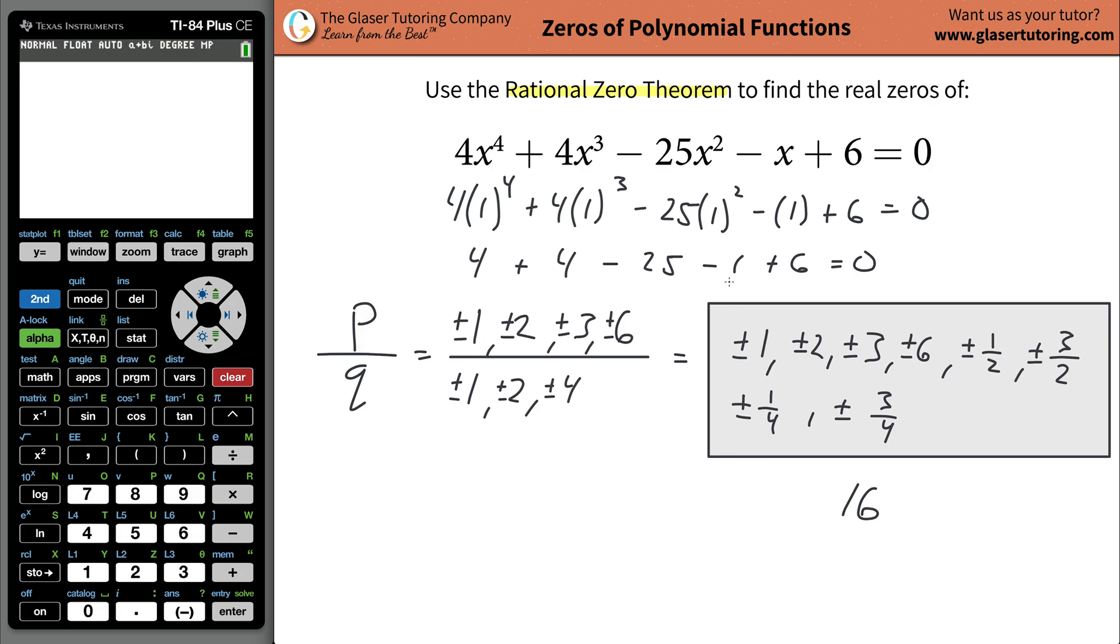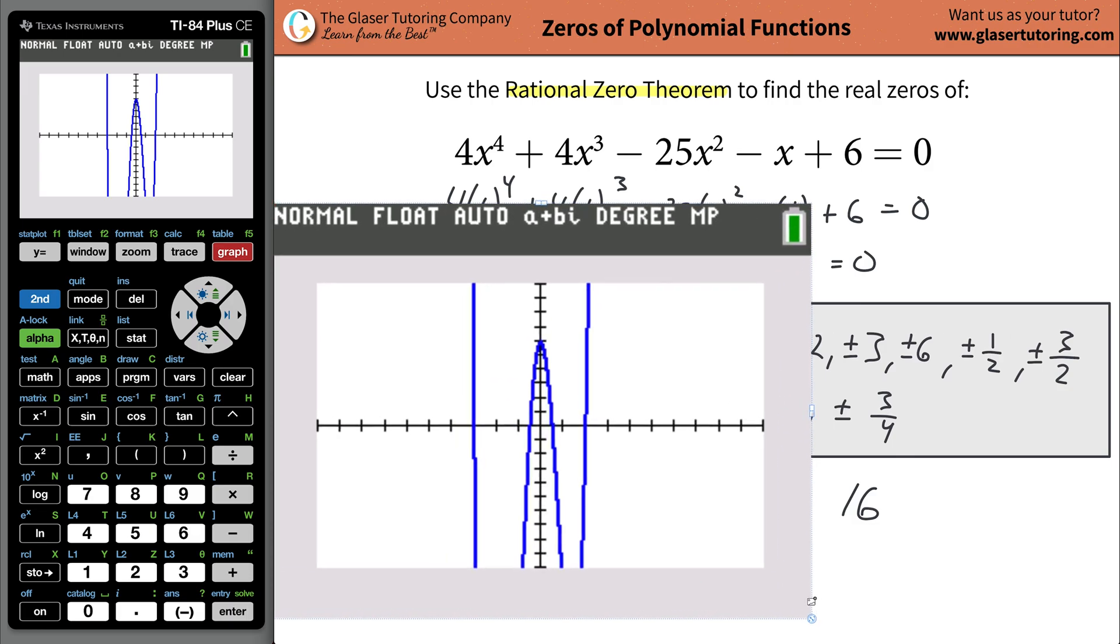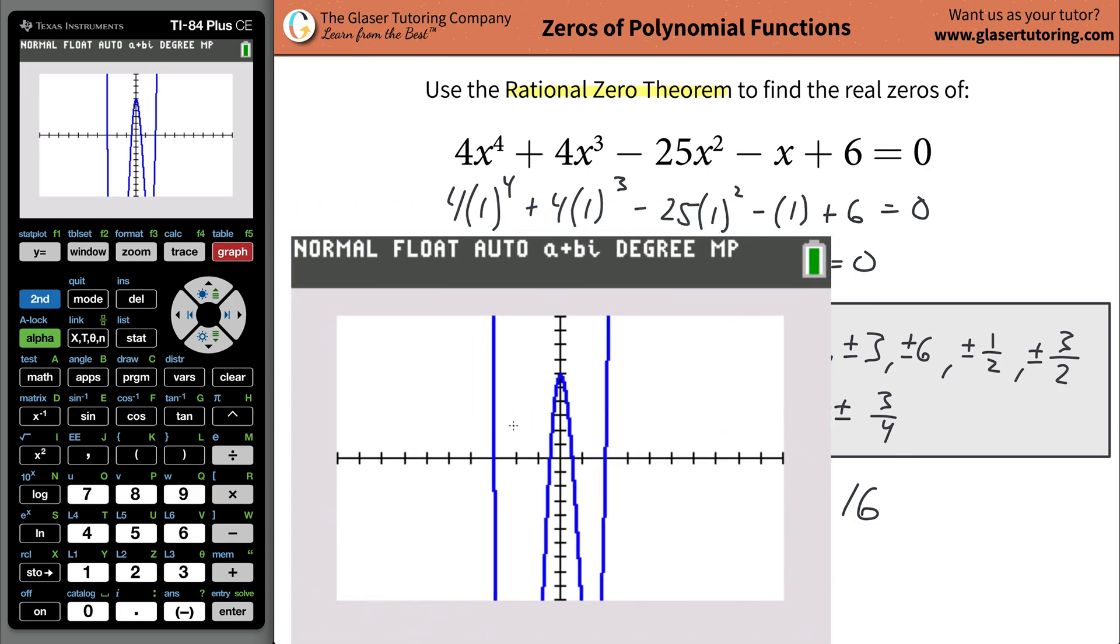If it does, when I plug in 1 everywhere I see x, if this does indeed equal 0, then I know the value I plugged in, namely positive 1, is going to be a 0 of the function. It's a 0. It's not equal to 0. Remember, the 0s are defined as x values that result in an overall value for the function of 0. So this is going to be a 4. This is going to be a 4. This is going to be a minus 25. This is going to be a minus 1 and a plus 6. This isn't looking too promising. I don't think this adds up to 0. So guess what we proved? We proved that positive 1 is not a 0 of the function.